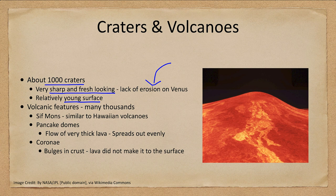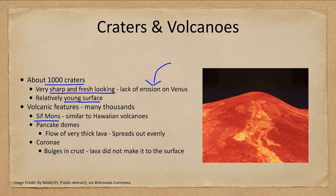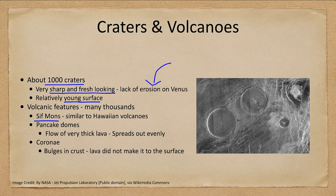We see volcanic features as well. In fact, Sif Mons is very similar to the Hawaiian volcanoes that we see on Earth. In the radar images, the lighter colored areas are the very irregular regions that reflect the radar waves very well, while smoother regions will appear dark. So those light regions are probably relatively fresh lava. It's still thought that Venus may be undergoing volcanic activity to this day — certainly much more recently than on the Moon or even on Mars. We also see pancake domes, which are flows of a very thick, viscous lava that spread out in a more even manner.